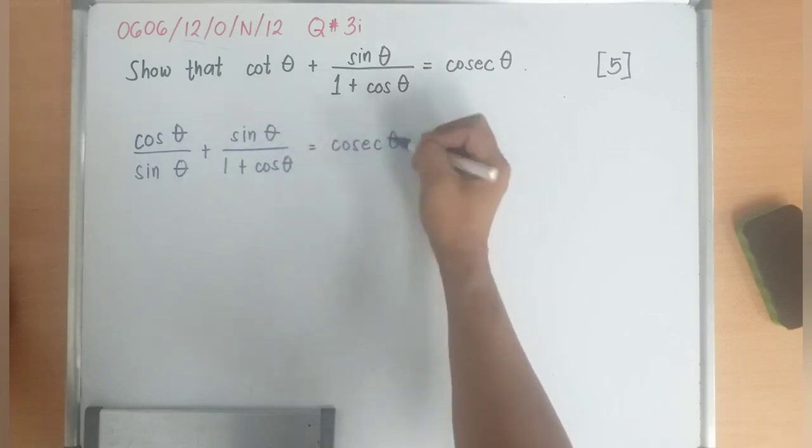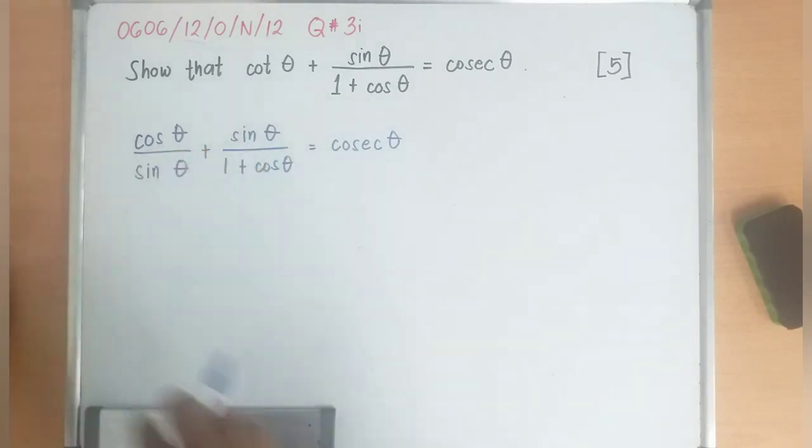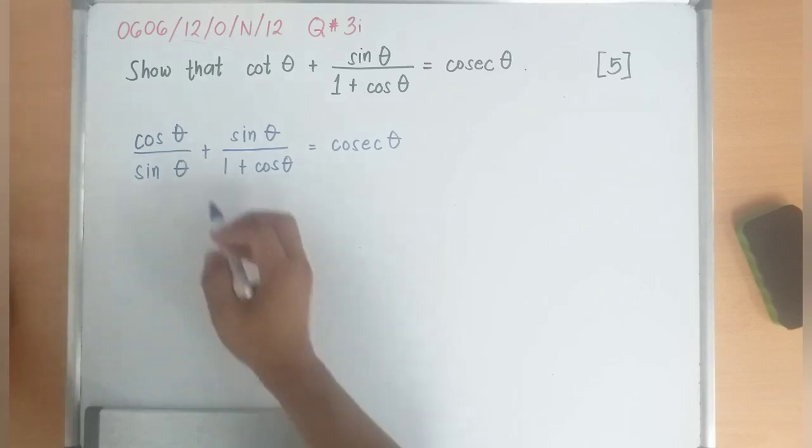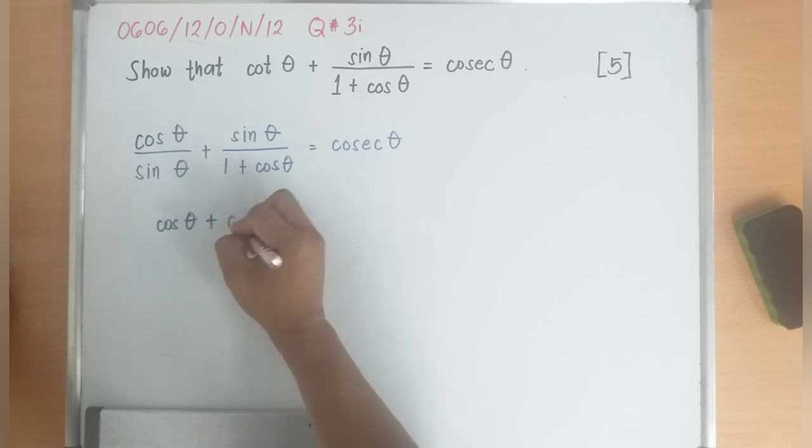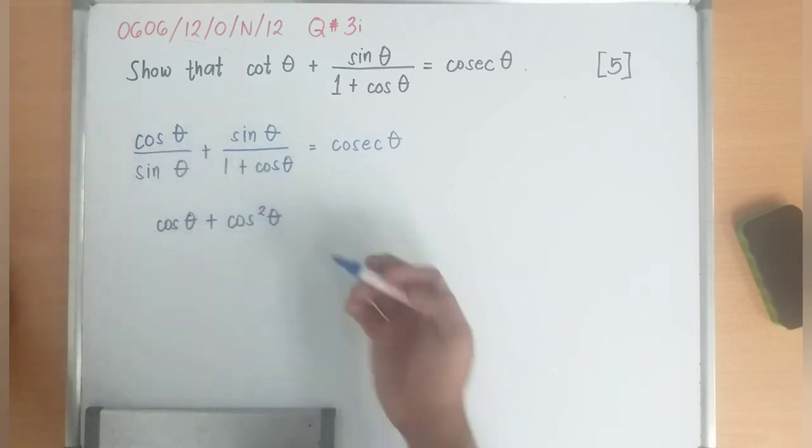You will notice that I can already add these two. This times this is cosine theta plus cosine squared theta. Why? Cosine theta times 1 is cosine. Cosine times cosine is cosine squared theta.